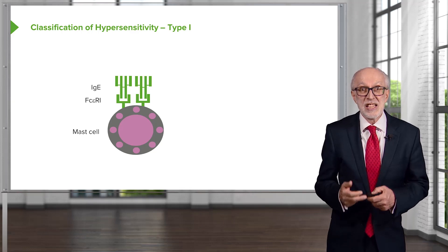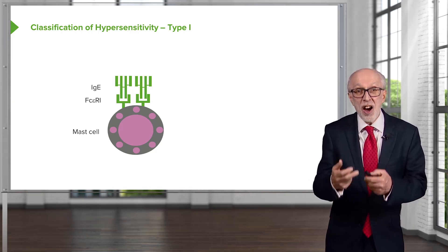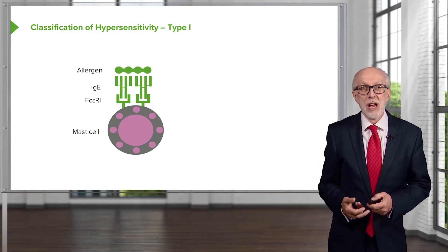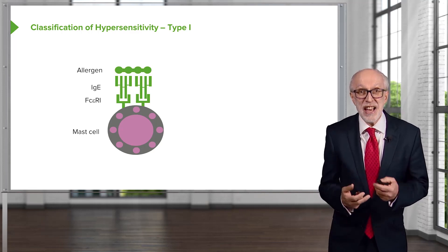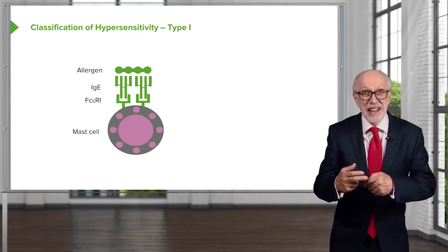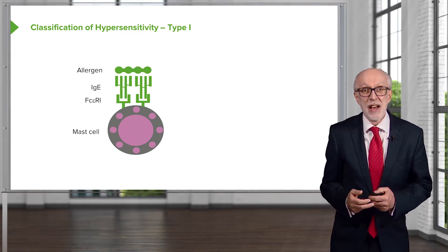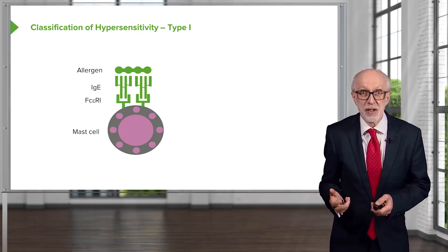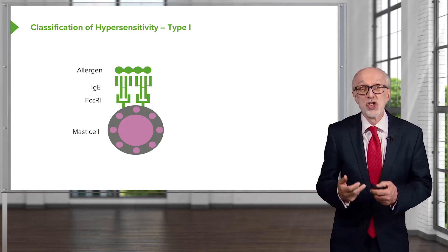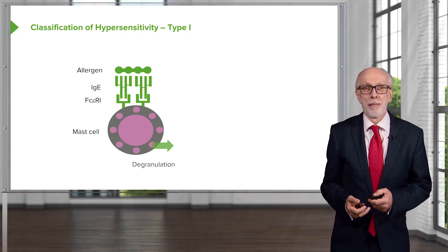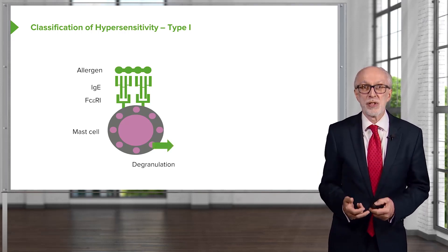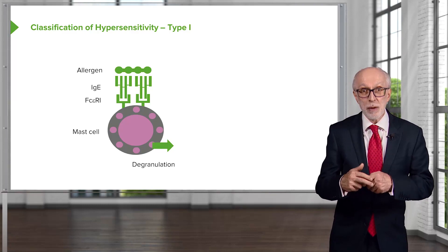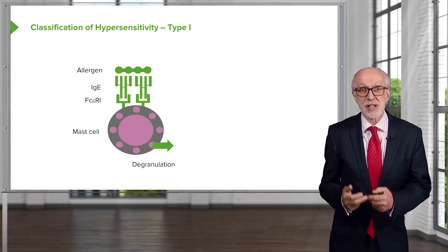The problem arises if an antigen comes in which the IgE is specific for and that antigen binds to the IgE. What happens then is the IgE antibodies on the surface of the mast cell get cross-linked. If this substance is a completely innocuous substance — for example, grass pollen — we refer to it as an allergen, and it's going to generate allergy. The consequence of the IgE antibodies being linked together by the allergen is that the mast cells release their granules — they degranulate.